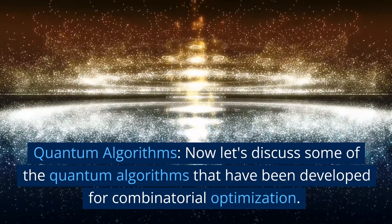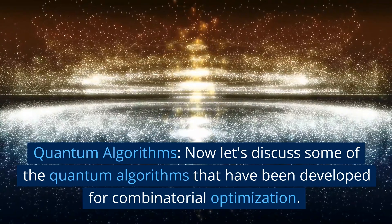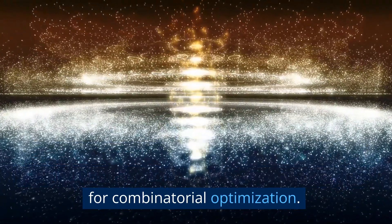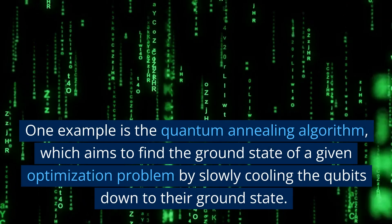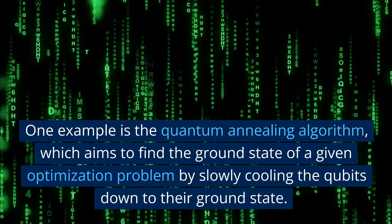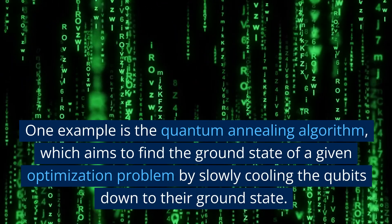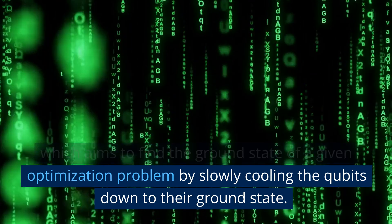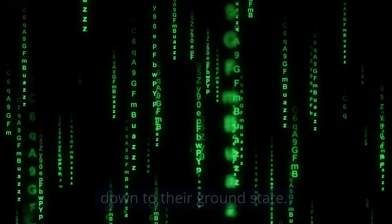Quantum Algorithms. Now let's discuss some of the quantum algorithms that have been developed for combinatorial optimization. One example is the quantum annealing algorithm, which aims to find the ground state of a given optimization problem by slowly cooling the qubits down to their ground state.